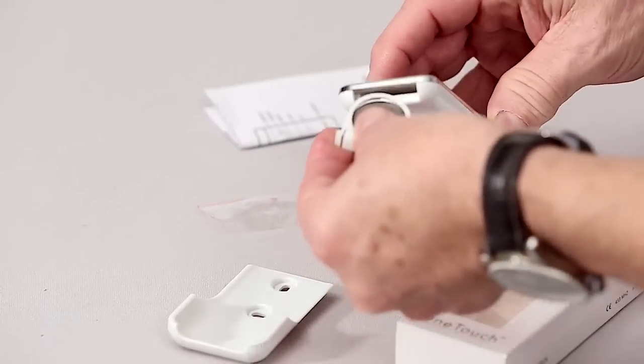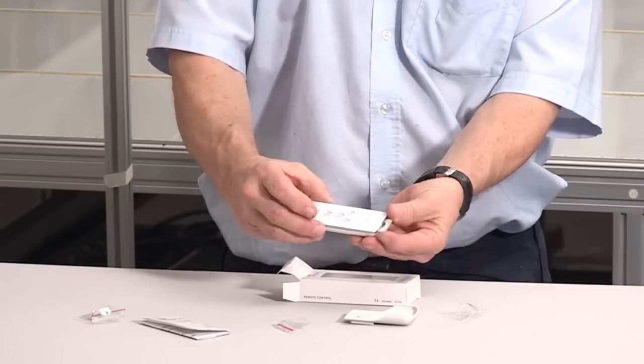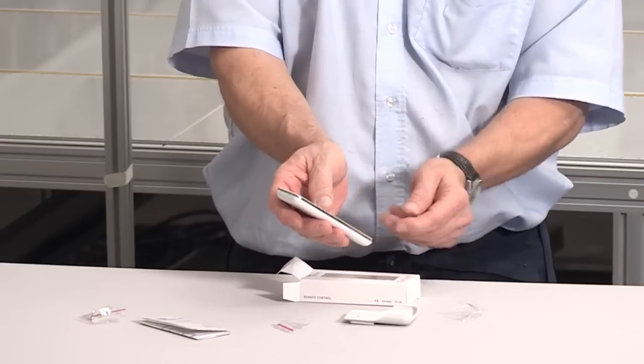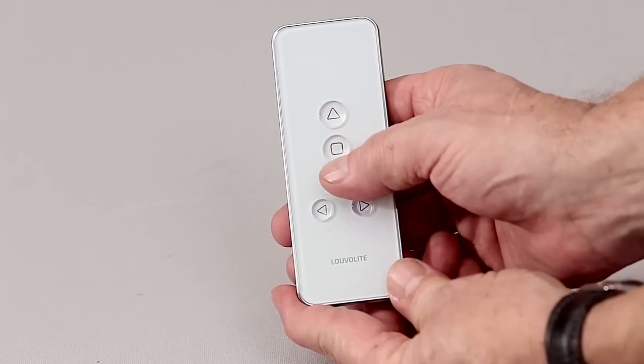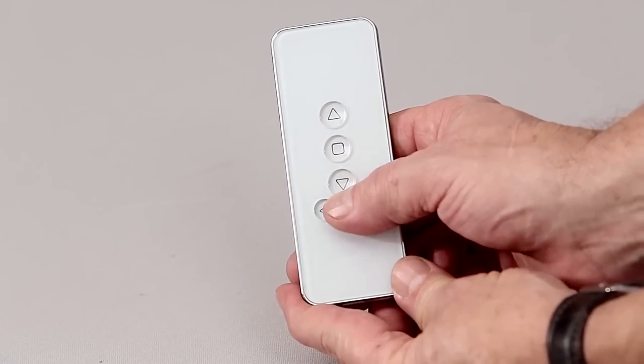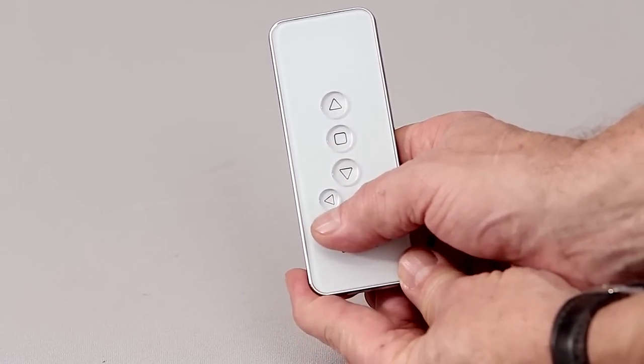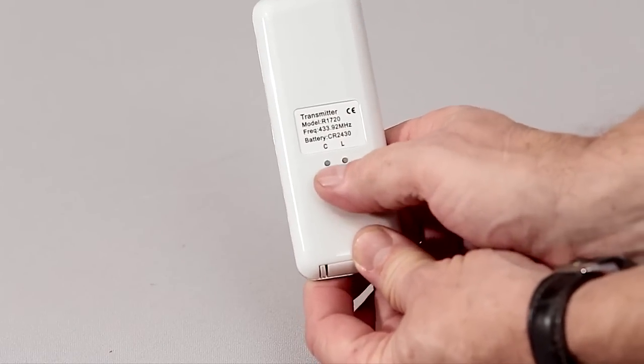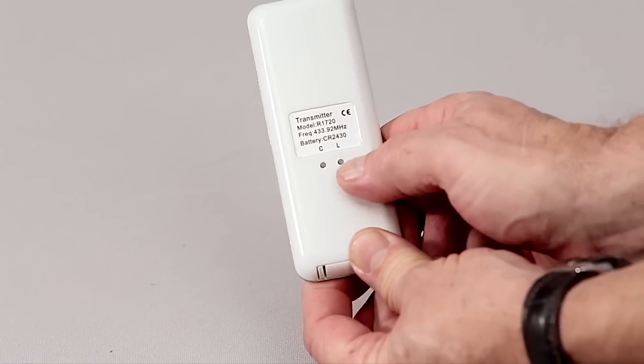Insert the battery into the base of the remote control. The buttons on the remote control are up, stop, down, and channel selection. On the reverse is the confirm button and the limit button.